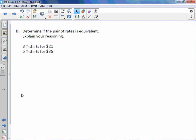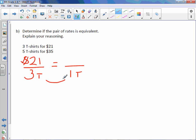Letter B. Determine if the pair of rates is equivalent. Explain your reasoning. So 3 t-shirts for $21. Generally speaking, we would put money on top. So $21 and 3 t-shirts. I'm just going to label it T. Let's make that a unit rate. To get from 3 to 1, we divide by 3 and do the same up top. $21 divided by 3 is $7.